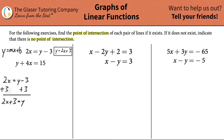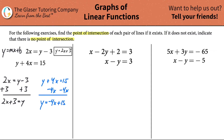Now for the second equation: y + 4x = 15. I subtract 4x from the left-hand side over to the right, and I get y = -4x + 15. Both equations are now in y = mx + b form.